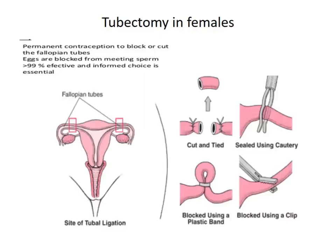Tubectomy in females is permanent contraception to block or cut the fallopian tubes. If the fallopian tube is cut, the egg will never meet the sperm. It is 99% effective and is an informed choice. The fallopian tube can be clipped, banded with a plastic band, cut and cauterized, or a clip can be used.